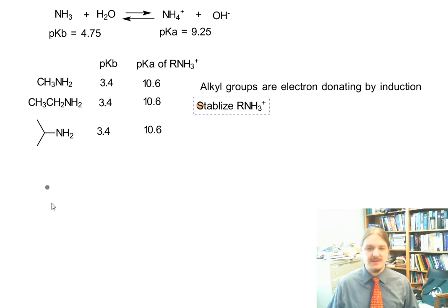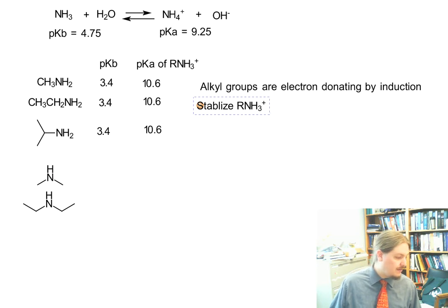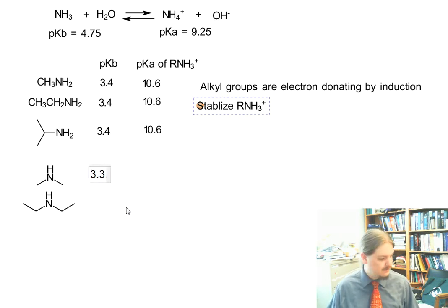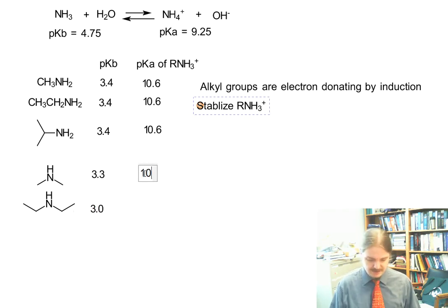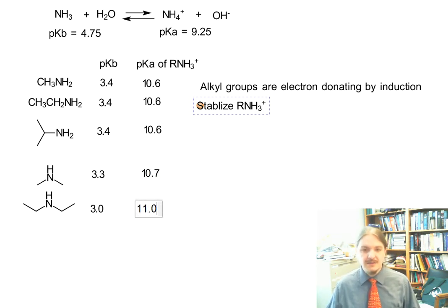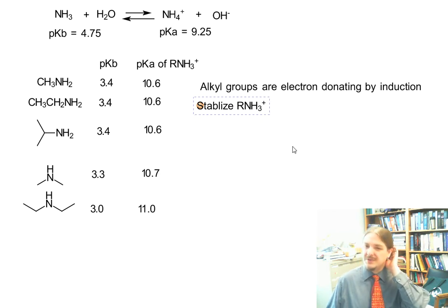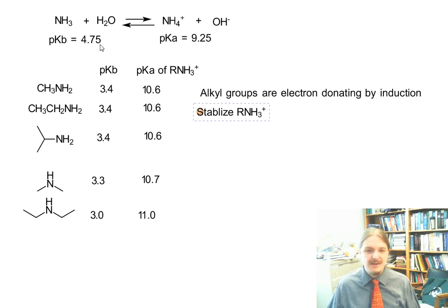Shall I add another alkyl group? Yes, let's add another alkyl group. Dimethylamine has a pKb of 3.3, and diethylamine has a pKb of 3.0. That means the pKas of the conjugate acids are 10.7 and 11. So adding an extra alkyl group increases the basicity by just a tiny bit more, but not as big as the difference between ammonia and one alkyl group.